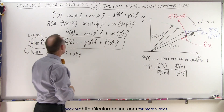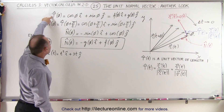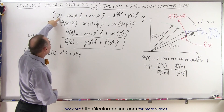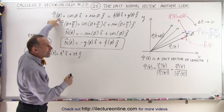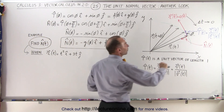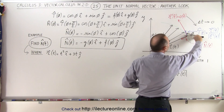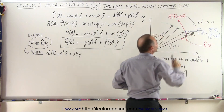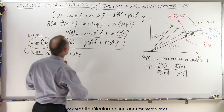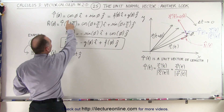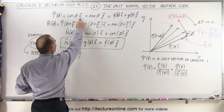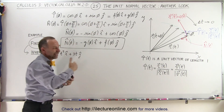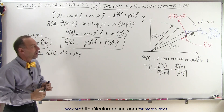We also saw that we can define the unit tangent vector as a function of the angle phi, which is defined as the angle from the positive x-direction to the direction of the unit tangent vector. So we write this as the cosine of phi in the i-direction plus the sine of phi in the j-direction — the i and j being the x and y directions.